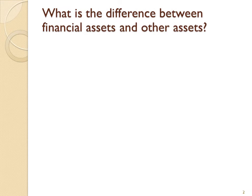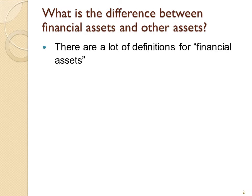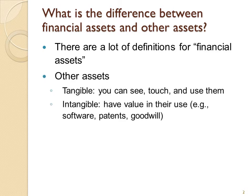Now there are a lot of definitions for financial assets, but I think we should start by looking at other assets. You may be familiar from accounting class that there are two types of assets: tangible and intangible assets. Tangible assets, well tangible is a fancy word that means you can touch it. So tangible assets are those that you can see, touch, and use in a normally physical type of way.